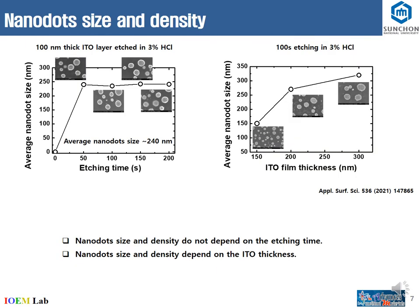Regarding nanodot size and density, if we increase the aging time there is no change in nanodot size and density, where the average nanodot size is about 240 nanometers. But if we increase the ITO thickness, then the nanodot density and size are changed, which we can clearly see in these characteristics. Therefore, we can say nanodot size and density depend on the ITO thickness.